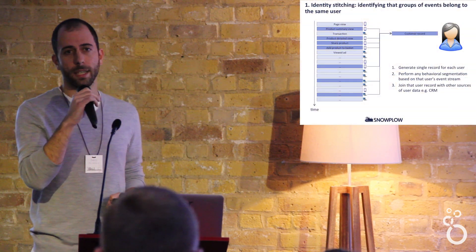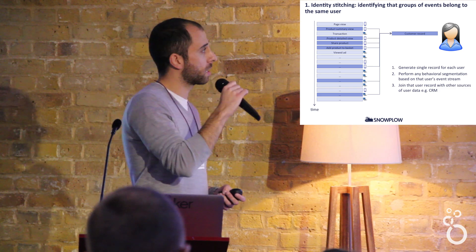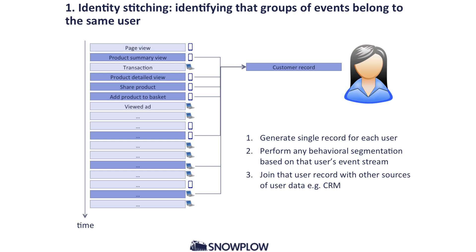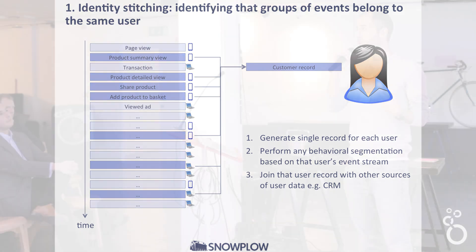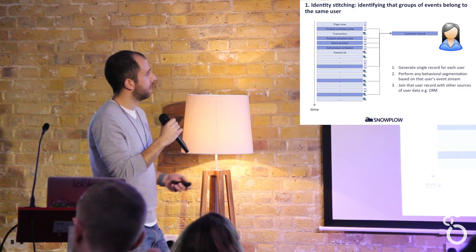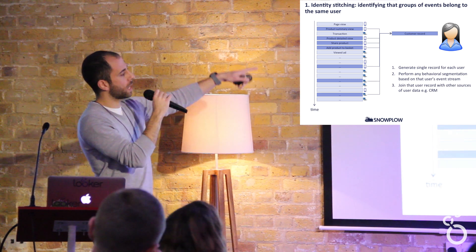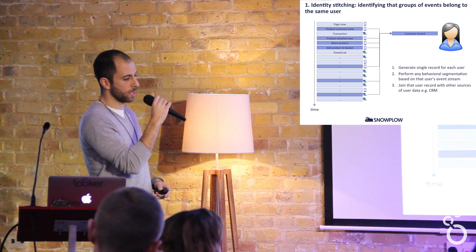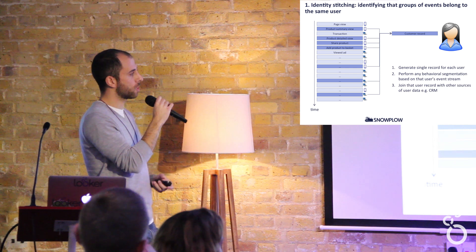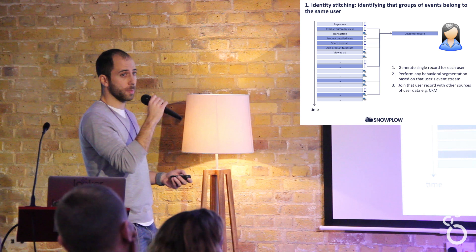The first step that nearly all our users take is what we call identity stitching. Identity stitching is the process of looking at your event stream and figuring out that a handful of these events are actually all being performed by the same user. In a web world and in a multi-channel world, this isn't a straightforward thing to do. We find that different users adopt different identity stitching algorithms and approaches, not just to stitch user behaviors across different browsers and devices, but even within the browser. When we're doing identity stitching, we're identifying all the events that belong to a user, then aggregating across all those events to generate a single record for that user, and often doing behavioral segmentation and joining with other customer data sets like CRM.